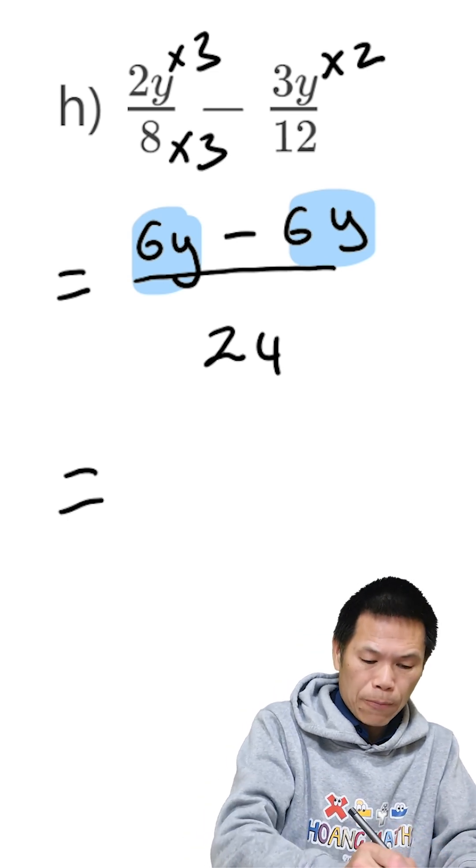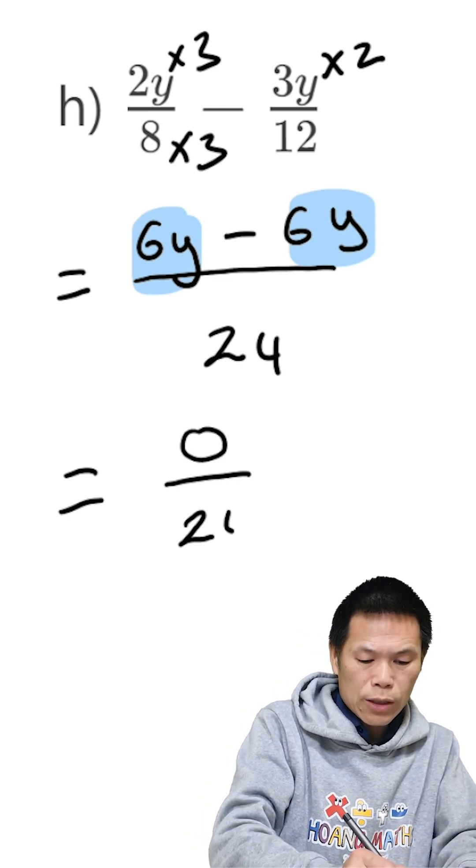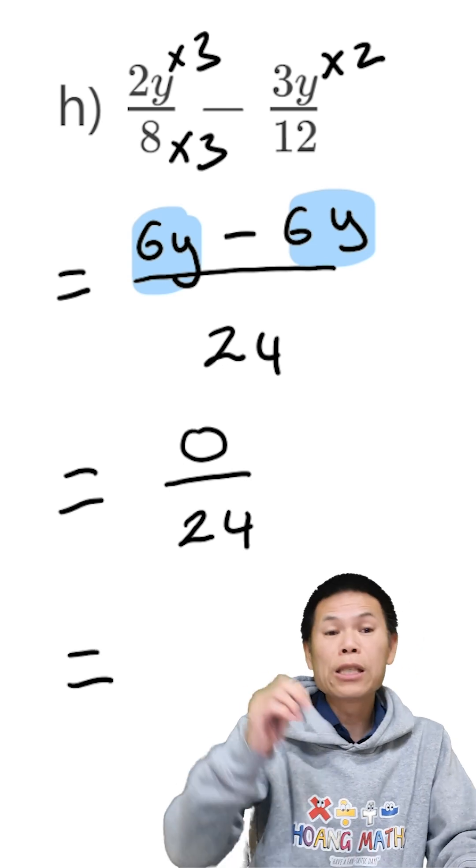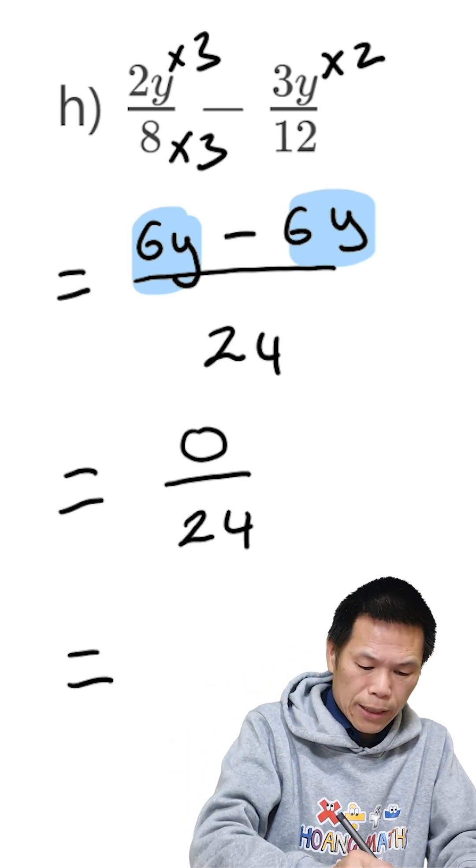Let me write this down. 0 over 24. But then 0 divided by 24 is 0.